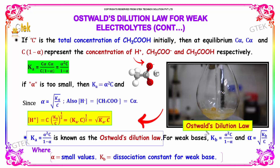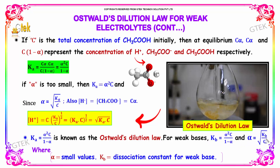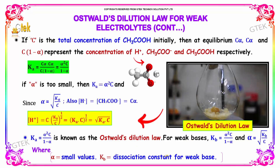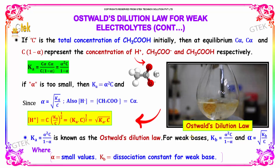For weak bases, Kb equals alpha² × C divided by (1 - alpha), and alpha equals the square root of Kb divided by C. Here Kb is the dissociation constant of the weak base, and this approximation holds for small values of alpha.